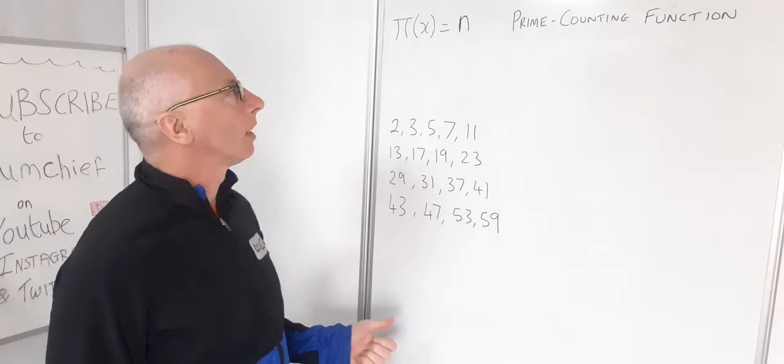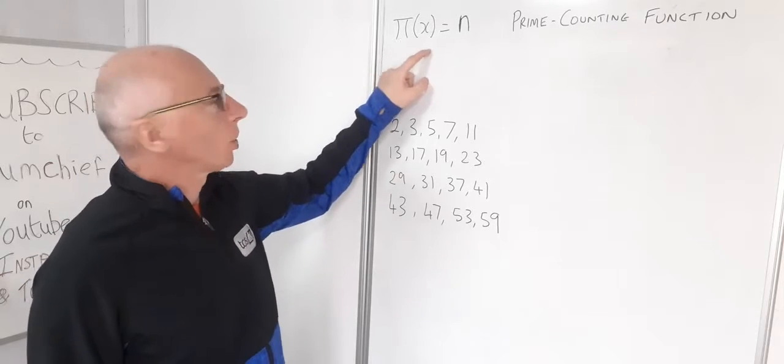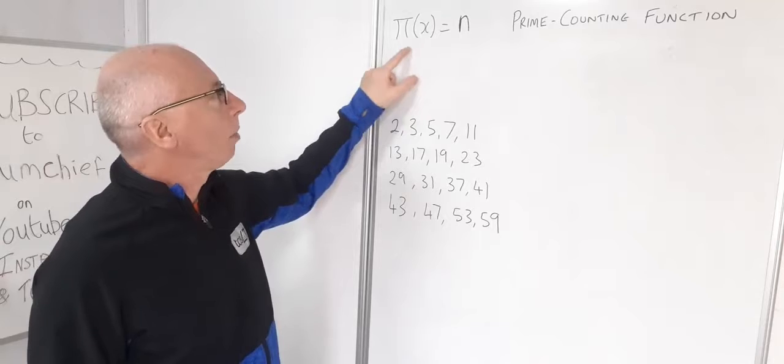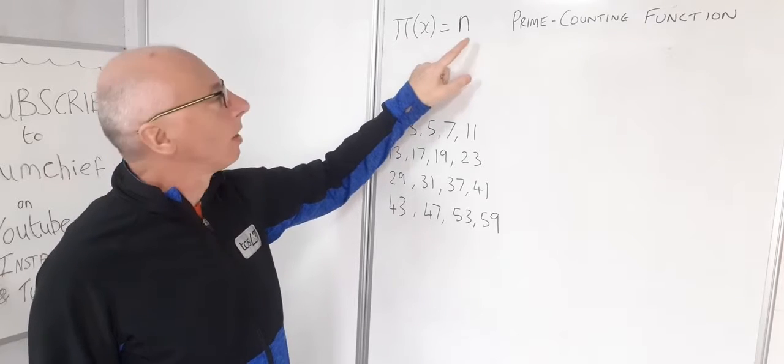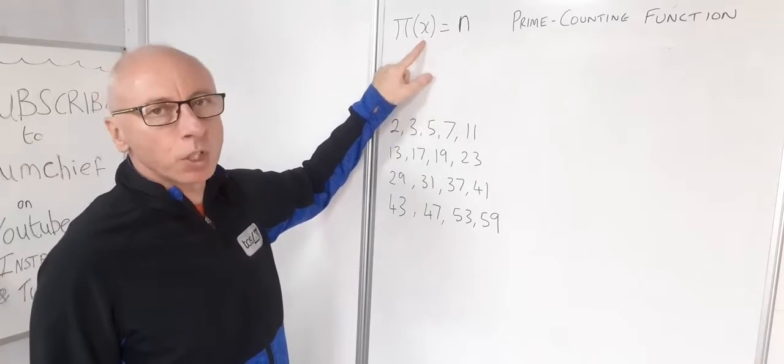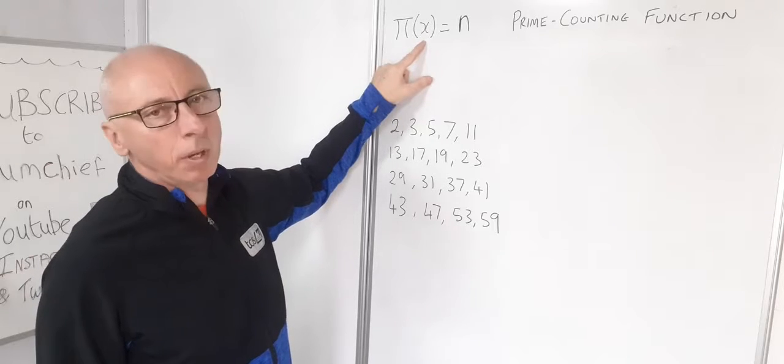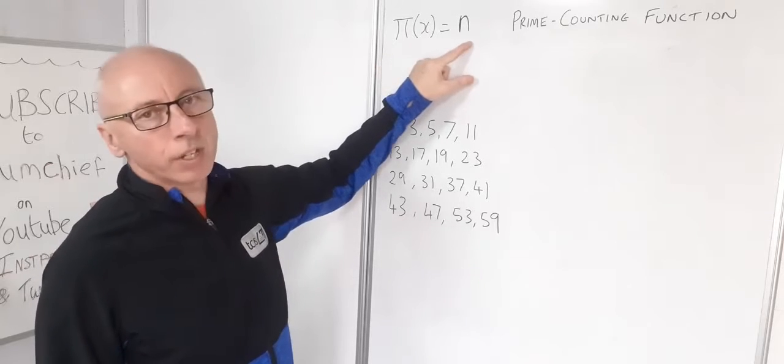The prime counting function is written like this: π(x) = n, where n is the number of prime numbers up to and including the number x, for all natural numbers.